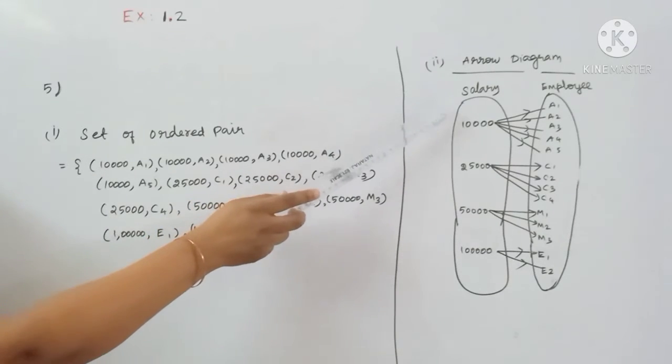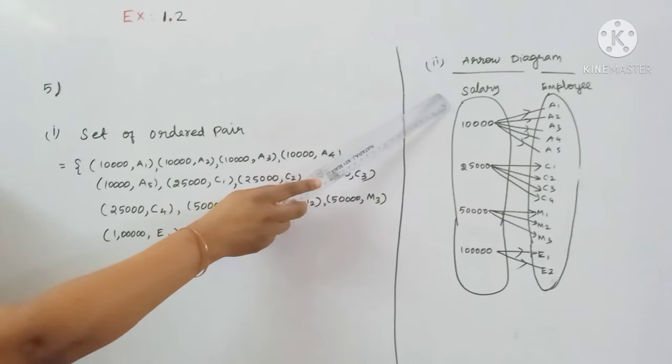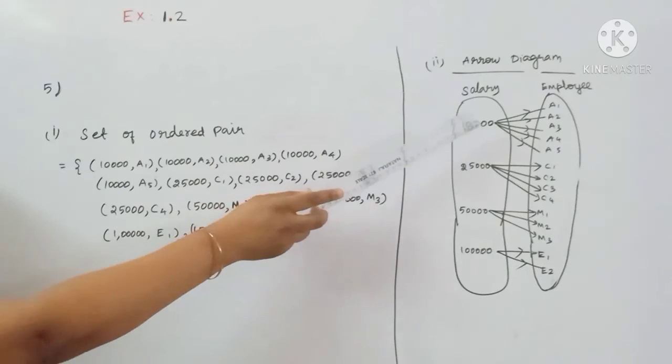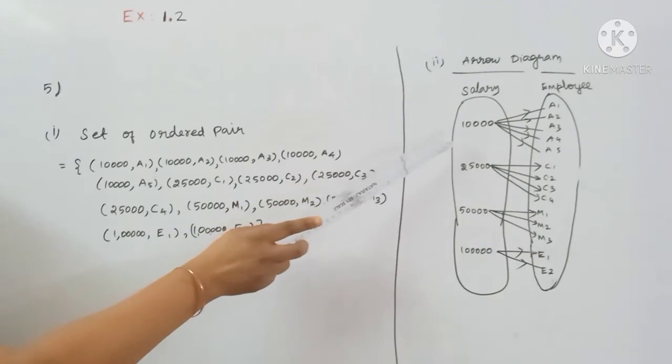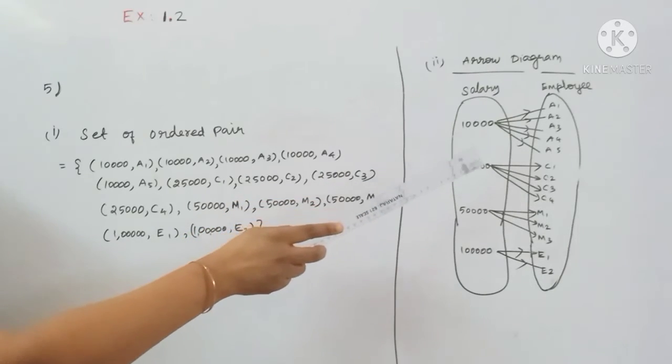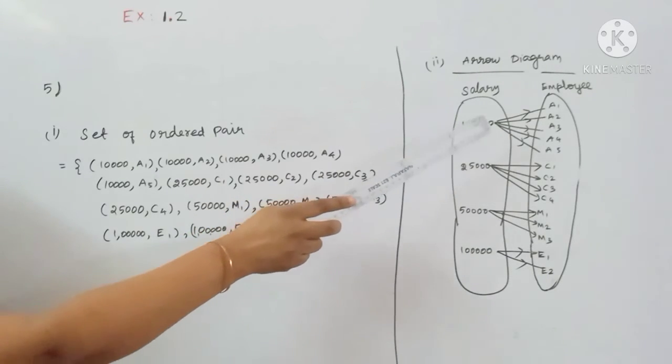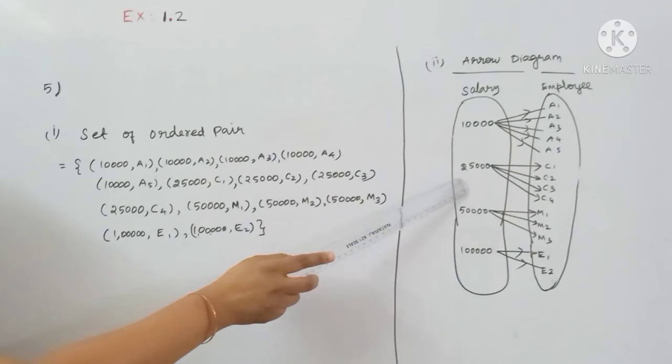Next, the employee to salary representation. So 10,000 has A1, A2, A3, A4, A5. Then the salary C1, C2, C3, C4.